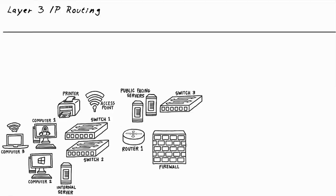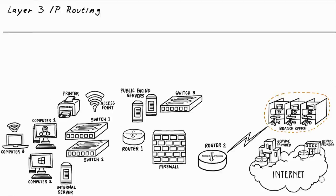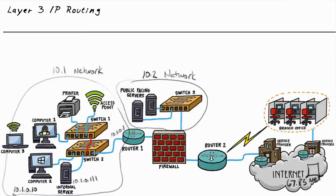Let's use this topology and let's pick on Bob once again down here at Computer2. Bob is on this 10.1 network and would like to communicate with the server. The server is on the same network at 10.1.0.111, so if Bob's going to communicate locally, he can learn the layer 2 address of the server, forward it to that server, and they can have a nice conversation back and forth.